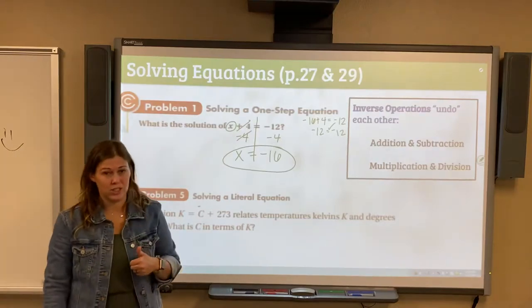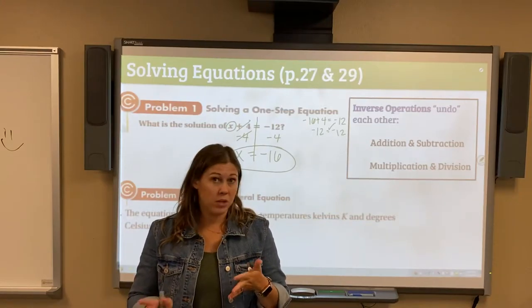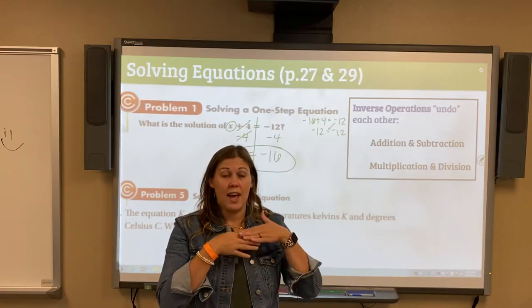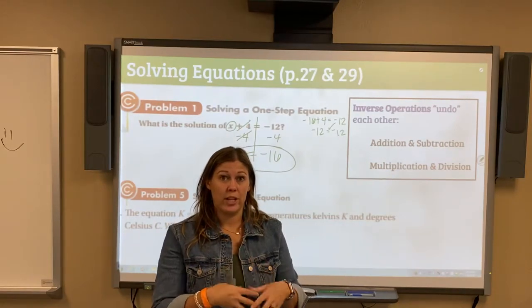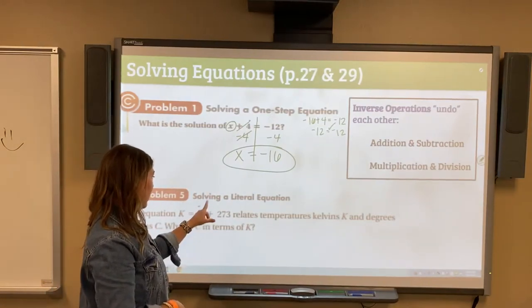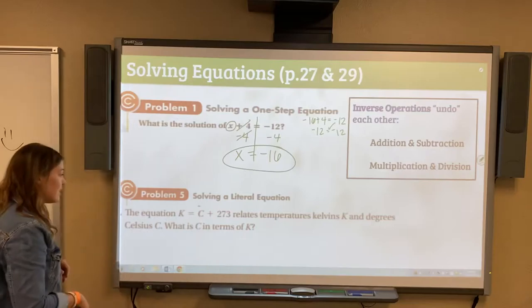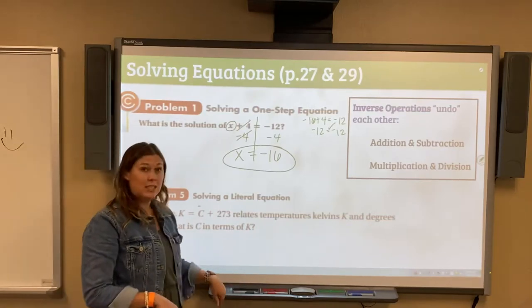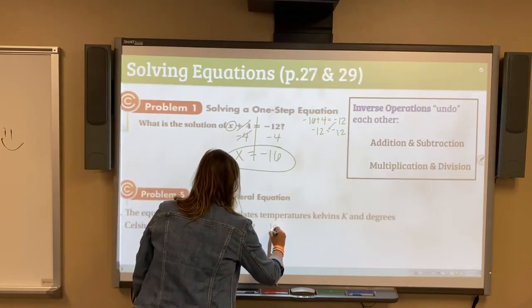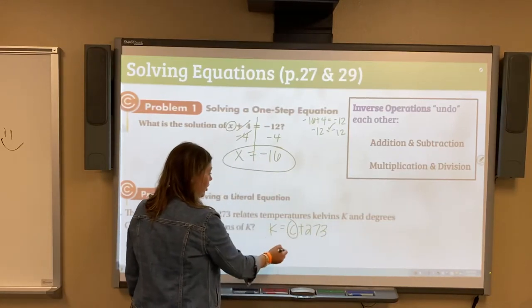Solving a literal equation. It will tell you literally what variable to solve for. You're probably not going to end up with a pretty number answer. With literal equations, you just solve and you may not be able to combine your like terms. We have the equation K is equal to C plus 273. This relates to the temperatures of Kelvin K and degrees Celsius C. What is C in terms of K? We are looking for the variable C.